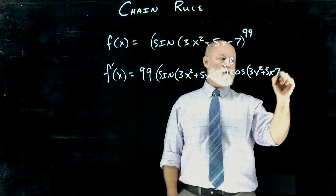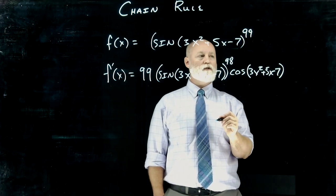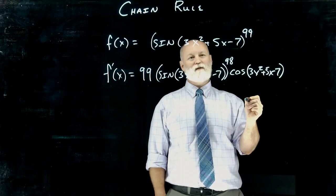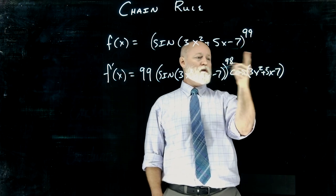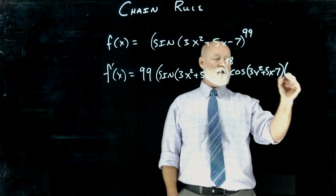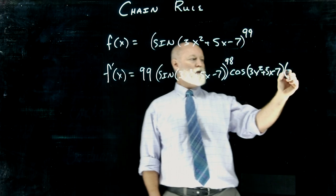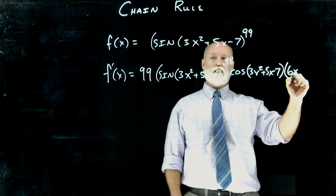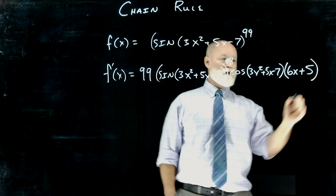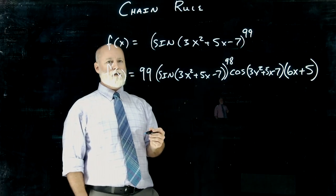And as happens with the chain rule, you frequently start to run out of space. So you might want to turn your paper sideways when you do these. So then we do the derivative of that inner piece, which in this case is going to be that polynomial. So that gives us 6x plus 5. And there is our derivative using the chain rule.